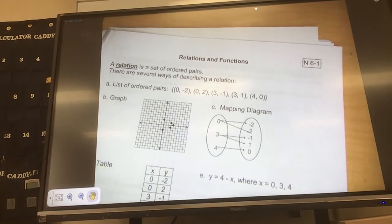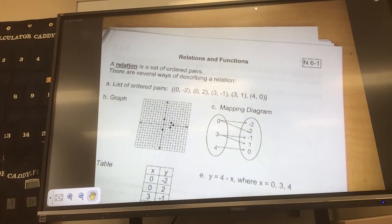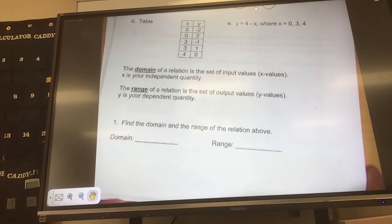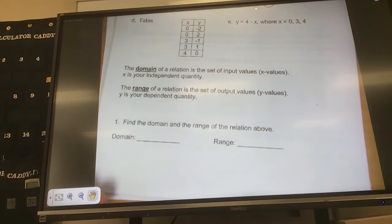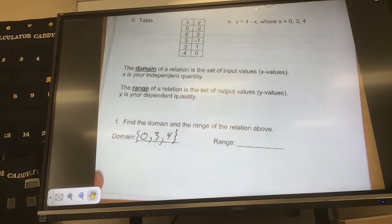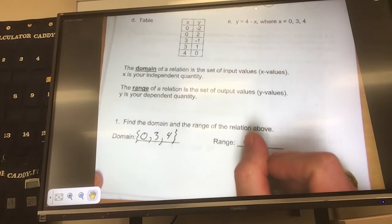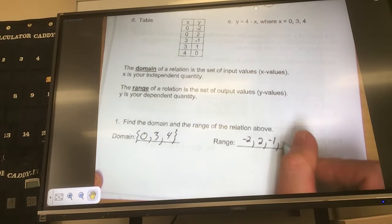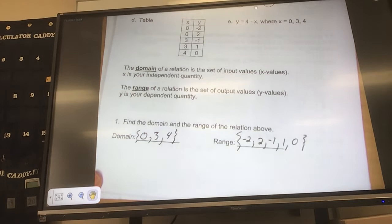Now, domain and range. Domain is my what values? My x values. If there is more than one, meaning it repeats itself, I don't have to write it twice. I'm just listing them. So domain of that data that's above, what is my x values, my domain? 0, 3, and 4. Good. And then I do a little squiggly line like that for my data set. Range is my y values, which are negative 2, 2, negative 1, 1, 0, and yes, I know that those were out of order. You can put them in order if you want, otherwise I'll take them like that.